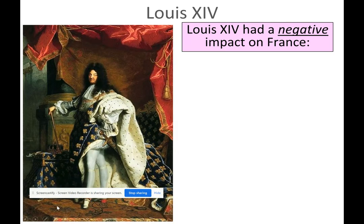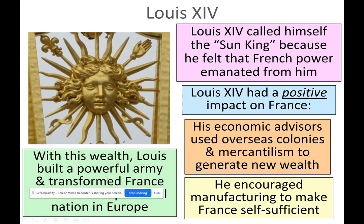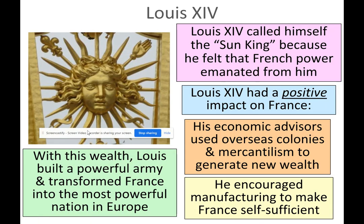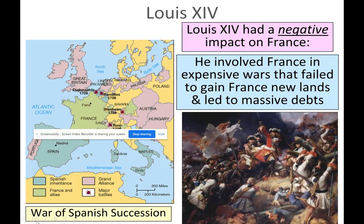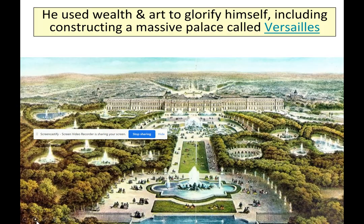With this wealth, Louis built a powerful army and transformed France into the most beautiful nation in Europe at the time. However, he also involved France in expensive wars that failed to gain new lands and led to massive debts — for example, the War of Spanish Succession. He also used wealth and art to glorify himself, including constructing a massive palace called Versailles.